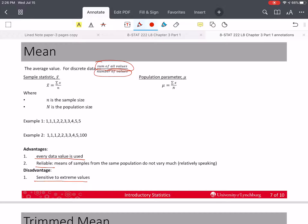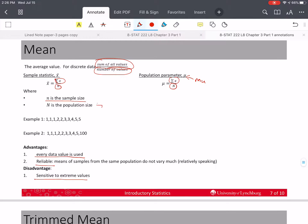For the sample statistic, x bar, we sum up all the values of x, that's the values of the data, and divide by little n, which is our sample size. For the population parameter mu, then we still add up all the values, but now we divide by capital N, which is the population size. So let's do that for our first example here.